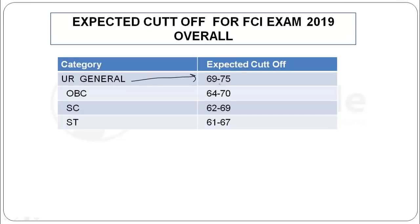For general, 69 to 75. OBC 64 to 70. SC 62 to 69. ST 61 to 67. You will see that our cutoff is not very low. Our cutoff is like clerk's exam cutoff because our paper was also moderate, moderate to easy level. The paper was easy.